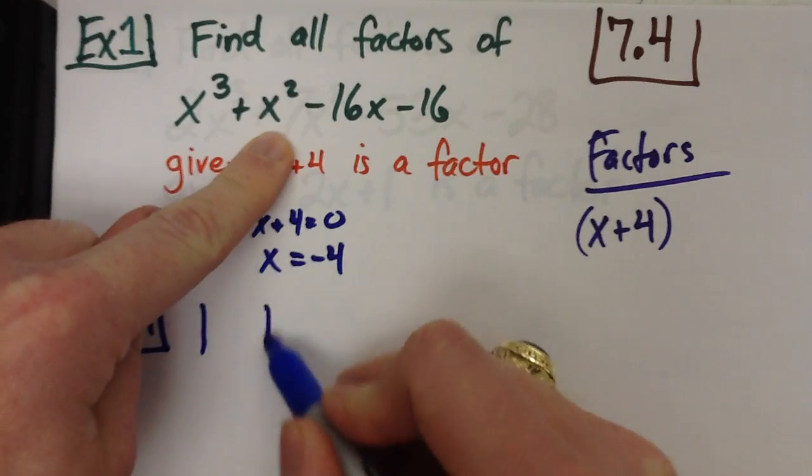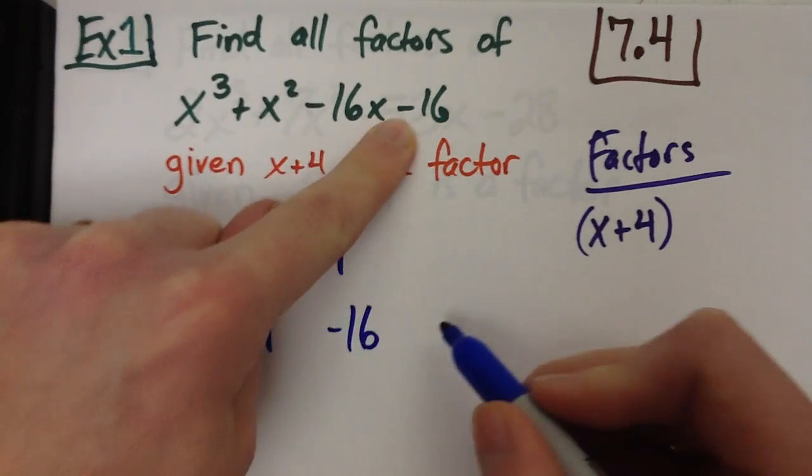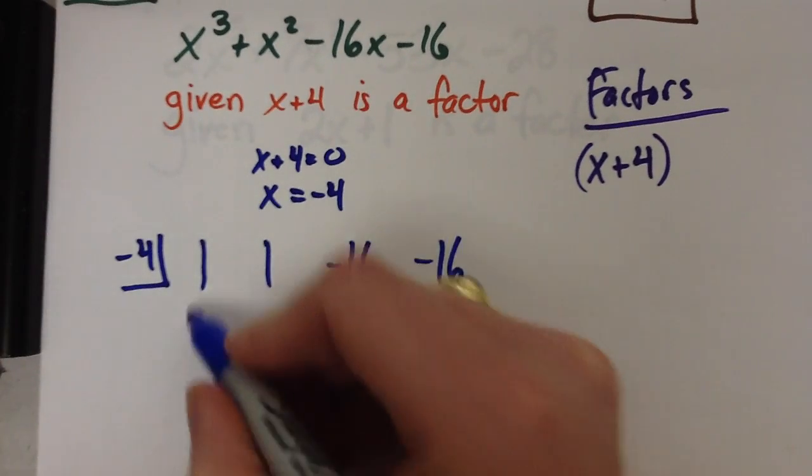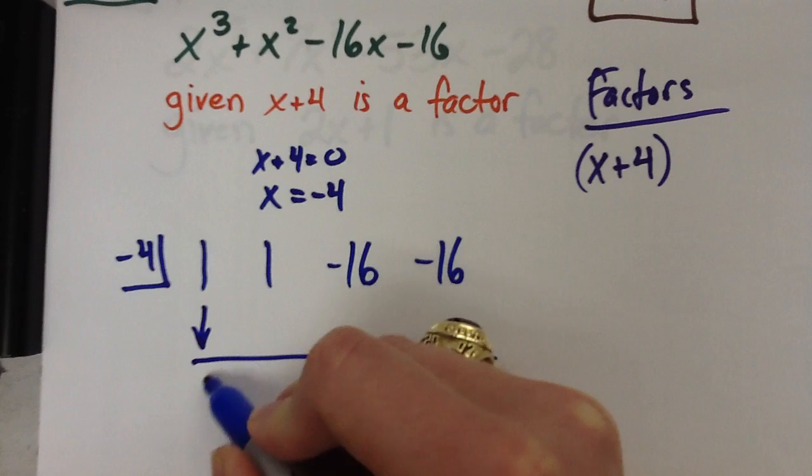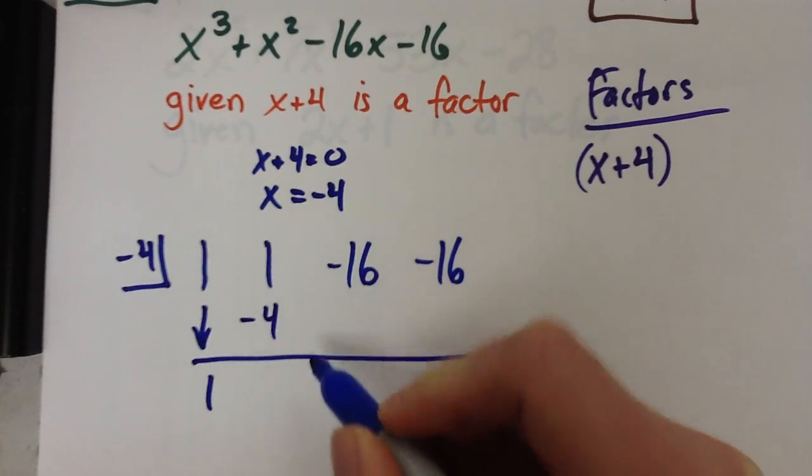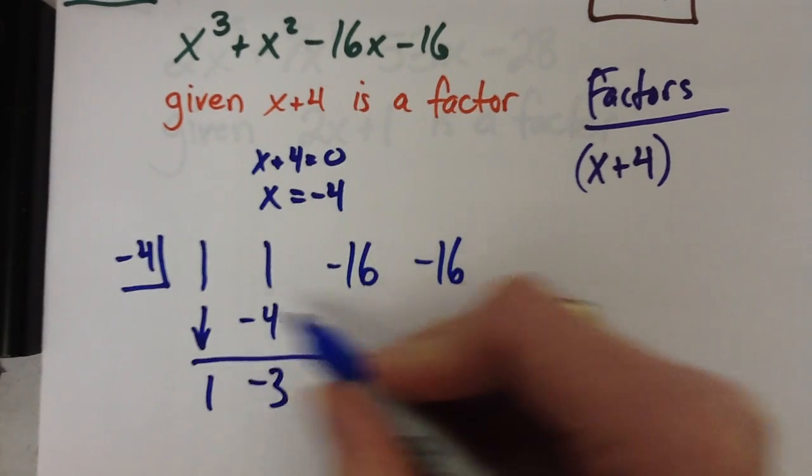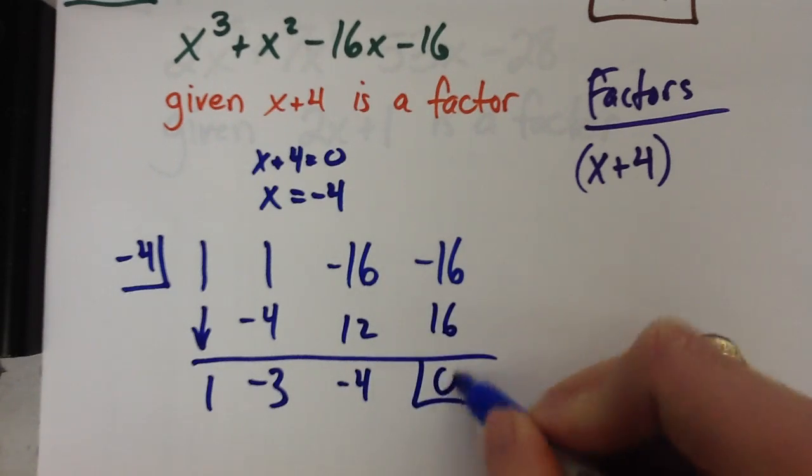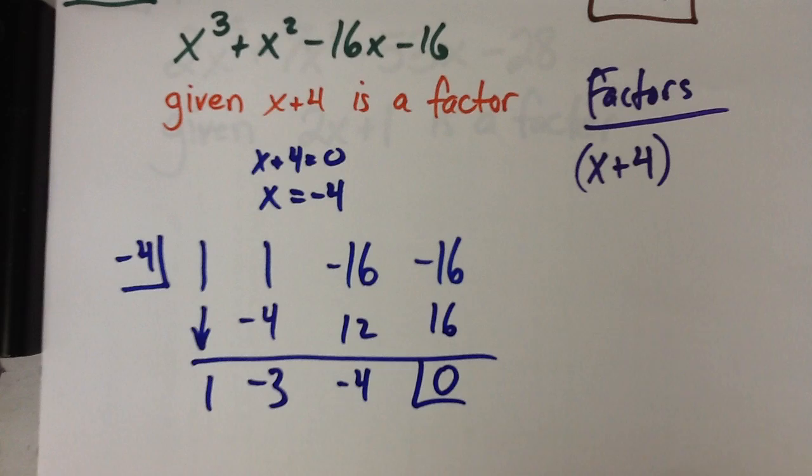All right, bring down your coefficients, 1, 1, negative 16, negative 16, and do your synthetic division. So 1, multiply, get negative 4, add those, multiply, add, multiply, remainder always needs to go in a box.